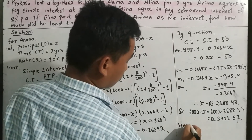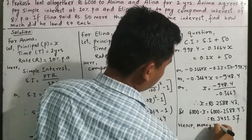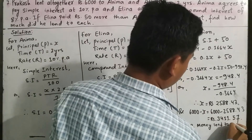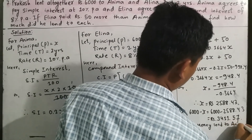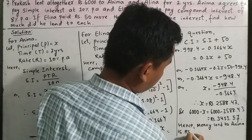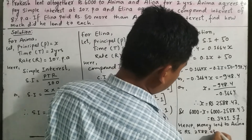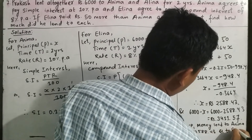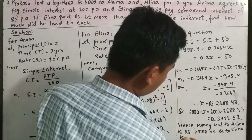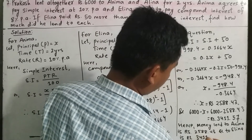Hence, money lent to Anima is rupees 2588.43 and money lent to Elena is rupees 3411.57.